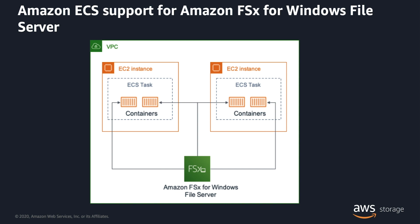In Amazon ECS, customers can add one or more volume definitions to an ECS task definition. You specify an Amazon FSx file system ID for the volume definition and ECS will take care of mounting the file system on the container, without customers having to worry about configuring the underlying infrastructure or any file system dependencies. ECS customers can get started with ECS support for FSx for Windows File System by using a CloudFormation template, CLI, SDKs, or the AWS Management Console.